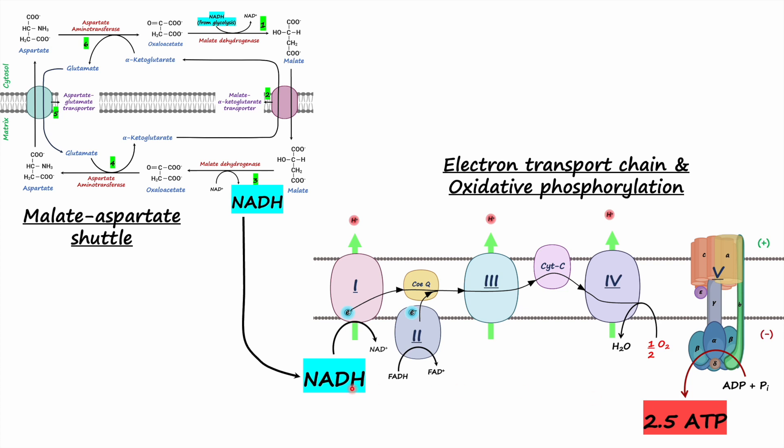So this is basically the overview of the malate-aspartate shuttle, where cytosolic NADH is oxidized in the mitochondria to synthesize ATP. I really hope you learned something new from this video. If you did, please like, share, and subscribe to the channel. Thank you so much for watching, and I'll see you again soon.